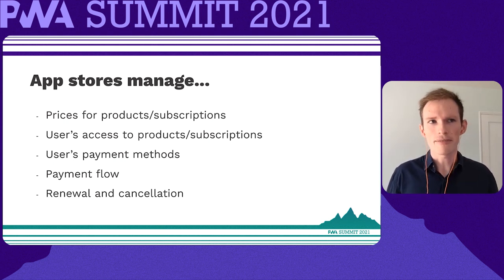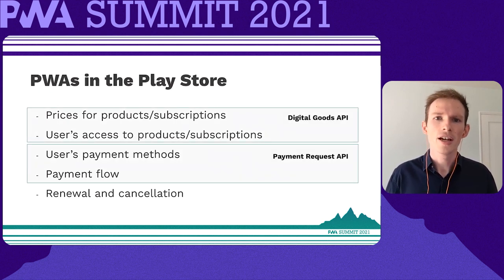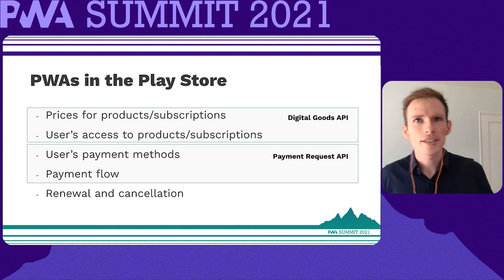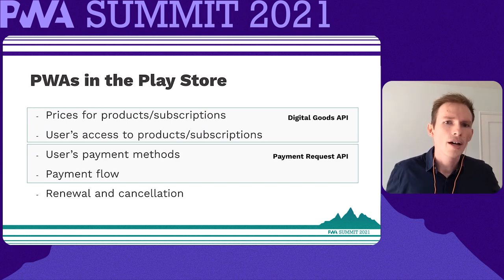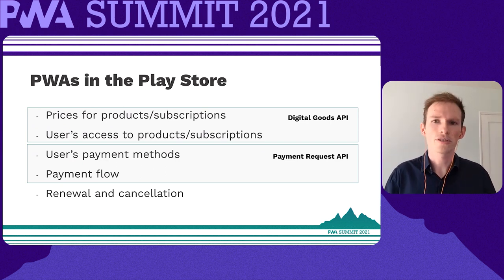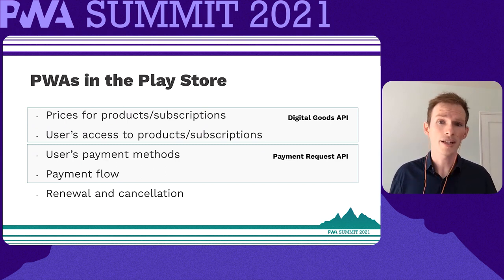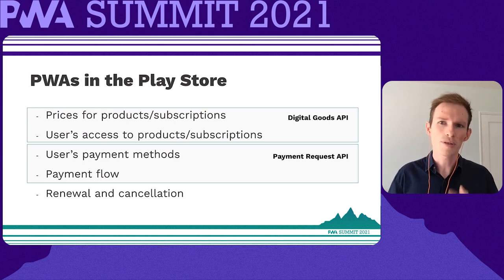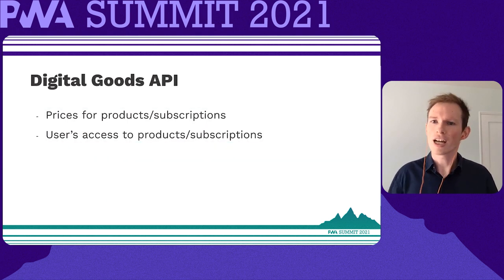In the Play Store specifically — and I wouldn't be surprised if the Microsoft Store behaves similarly — there are two APIs you're going to need to know. Interestingly, these are actually browser APIs, so you'll use them if you put your PWA in an app store, but you'll probably also use them as you keep working on websites. The Payment Request API, used for accepting payments, is in Chromium, in Safari, and behind a flag in Firefox. The Digital Goods API is a little more bleeding edge and is currently only used by PWAs in the Play Store on Android and Chrome OS.